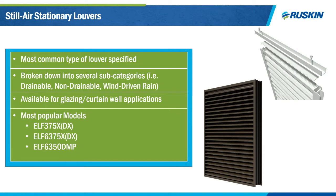The most popular models Ruskin offers are our ELF 375X and DX, our 6-inch ELF 6375X and DX, and our 6-inch ELF 6350 DMP. While all offer excellent performance for their louver class, the ELF 6350 DMP offers the best performance in the industry — 62% free area in its tested size, maxing out at 1,250 feet per minute free area velocity. No other louver in the industry meets both of these requirements. This will be the most expensive of the group with the highest performance, while the ELF 375X and DX offer great performance with the best economy.